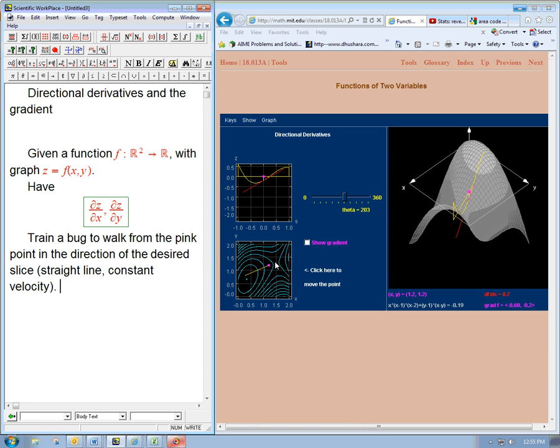Then what would that have to do with the directional derivative? And constant velocity, let's say unit velocity. So he's going one unit of distance for every unit of time.